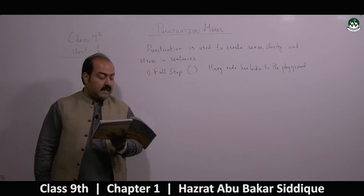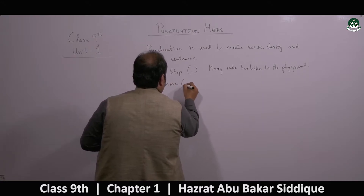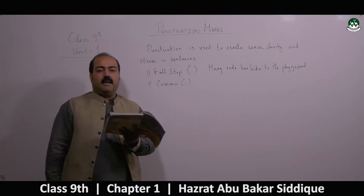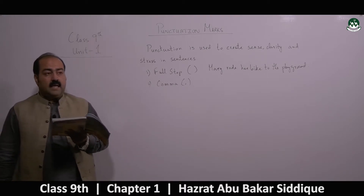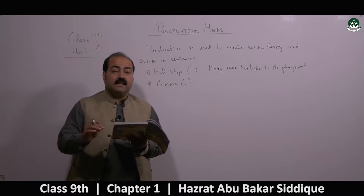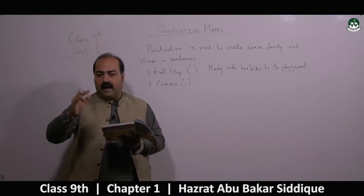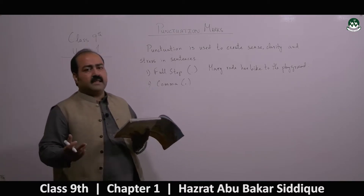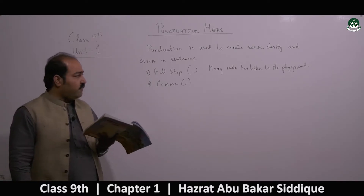The second punctuation mark is the comma. Comma has two functions. First, when you are listing things — two or more things — you use a comma to separate them from each other. Second, you use a comma to give a small pause in a sentence.